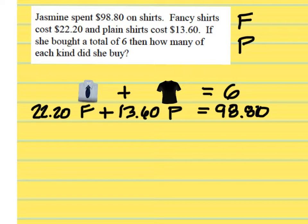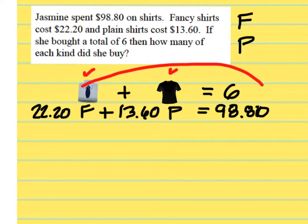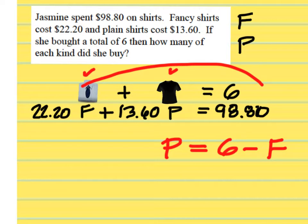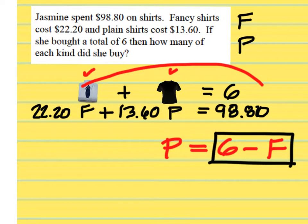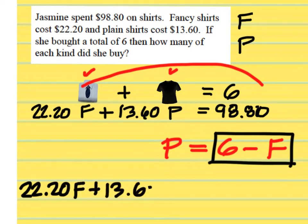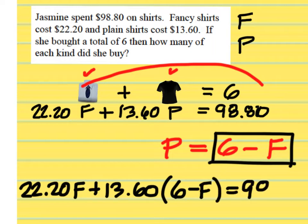Now we have to solve this system of equations. We can solve by elimination or substitution — it would probably be easier to solve by substitution. I am going to get the fancy shirts by themselves, moving the fancy shirt term to the other side, so that I am left with P equals 6 minus F. I will insert this expression into the second equation where I see a P.